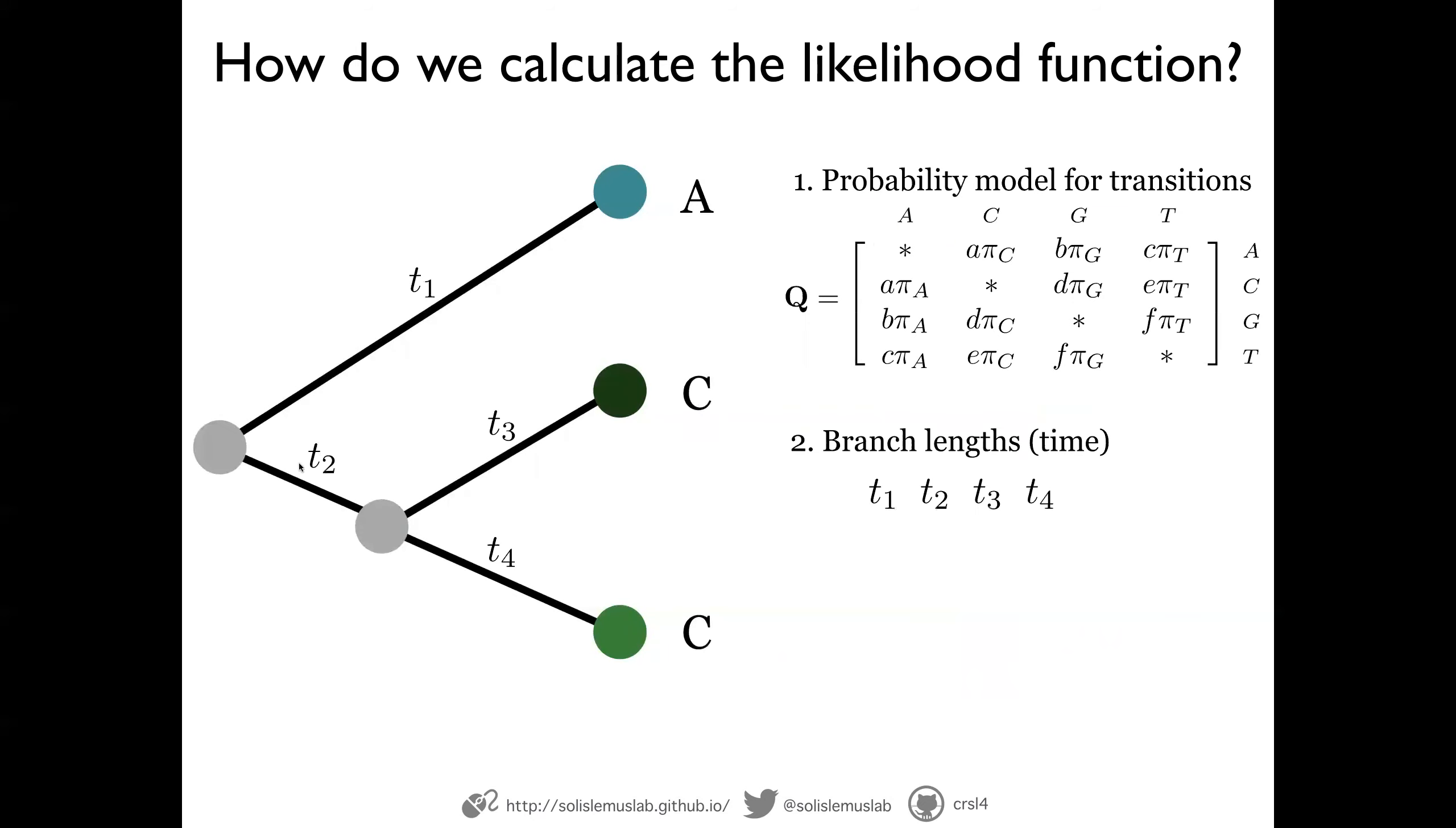We need branch length. So this tree, there's some time that passed. So whatever the site was at the root, there was some time that it took to mutate, evolve into the A that we observed today. So we need to know what is this time or estimate it.